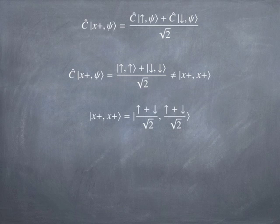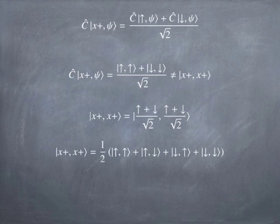Let's see why that is. |x+⟩|x+⟩ would be (up + down)/√2 times (up + down)/√2 for the two particles. If you multiply that out, it's up-up plus up-down plus down-up plus down-down, all divided by two. But the state we got was up-up plus down-down — we're missing the up-down and down-up states in our cloned state. So what that means is the cloning operator can't work. It could work in principle for cloning the two particular states up and down, but it can't clone an arbitrary state. The linear operator machinery just won't permit that.